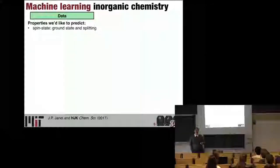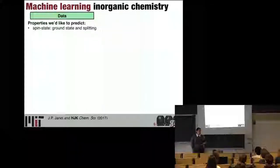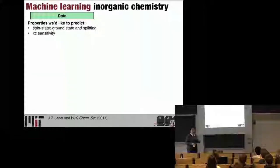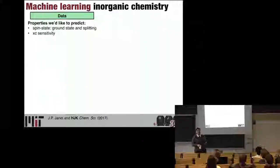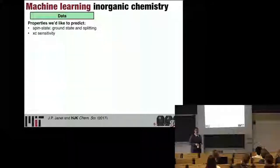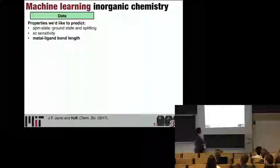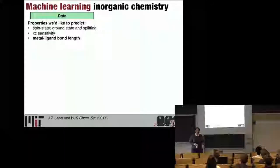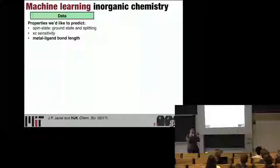I wanted to predict the ground state spin of a simulation — before I ever do the simulation, can I predict the quantum mechanical ground state spin? And because I'm a pragmatist who knows I don't trust DFT as far as I can throw it, I'd like to know how sensitive that spin state prediction is to the exchange-correlation functional I'm using. I wanted him to not use any geometric information at all, because I wanted to predict the metal-ligand bond length. One of the essential things MolSimplify does is construct inorganic complexes and guess the metal-ligand bond length you'd need at the end of a DFT geometry optimization — I wanted to know that before doing the calculation.